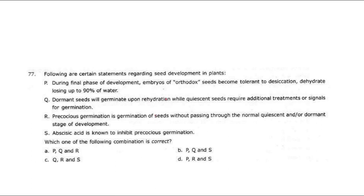Statements regarding seed development in plants: during the final phase of development, embryos of orthodox seeds become tolerant to desiccation, dehydrate, and lose up to 90% of their water. Orthodox seeds remain in dormant condition and can survive environmental conditions by losing large amounts of water. Dormant seeds will germinate upon rehydration, while quiescent seeds require additional treatment or signal for germination.